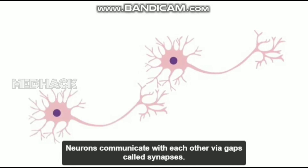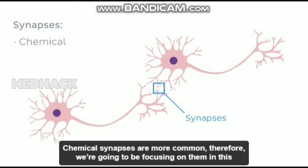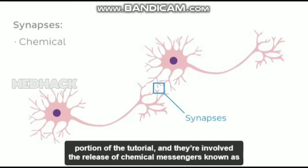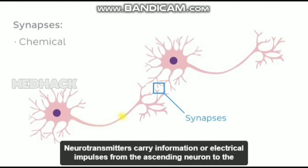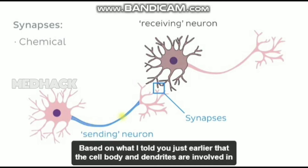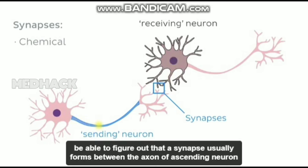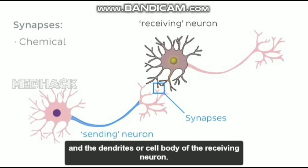Neurons communicate with each other via gaps called synapses. Synapses can be classified as chemical or electrical. Chemical synapses are more common, therefore we're going to be focusing on them in this portion of the tutorial, and they involve the release of chemical messengers known as neurotransmitters. Neurotransmitters carry information or electrical impulses from the sending neuron to the receiving neuron. Given that the cell body and dendrites are involved in receiving and processing information, and that the axons transfer the information, a synapse usually forms between the axon of a sending neuron and the dendrites or cell body of the receiving neuron.